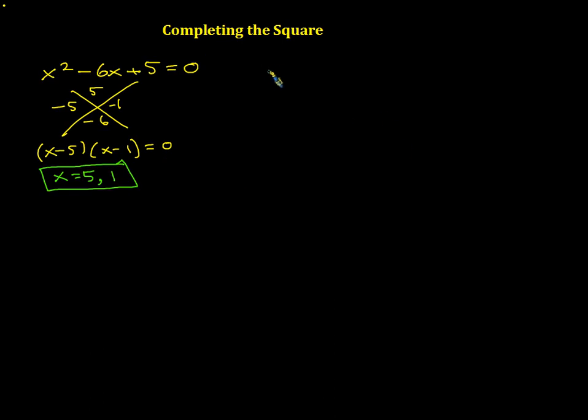What if the equation was slightly different, and instead of x squared minus 6x plus 5 equals 0, what if it was x squared minus 6x minus 3 equals 0? Well here, try as hard as you may.